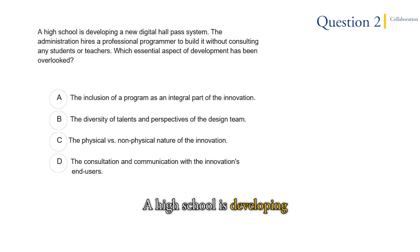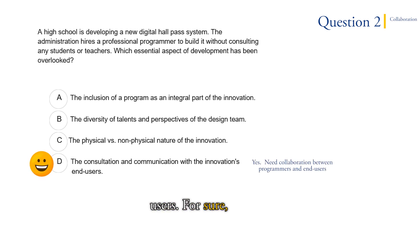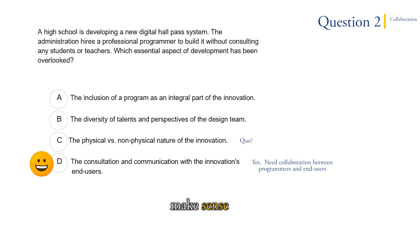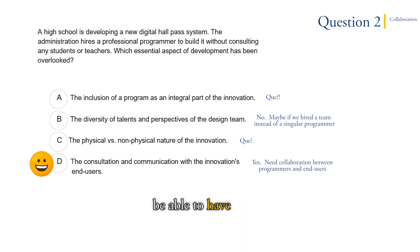Question 2: A high school is developing a new digital hall pass system. The administration hires a professional programmer to build it without consulting any teachers or students. What essential aspect of development has been overlooked? The answer is D — consultation and communication with the innovation's end users. Whenever you're making a project, you need collaboration between the programmers and end users. A is a trap because just because it has the word 'inclusion' does not mean it's correct. B is also a trap because it has the word 'diversity,' but the question specifies a single programmer, so a diverse design team isn't the issue. The answer is D.